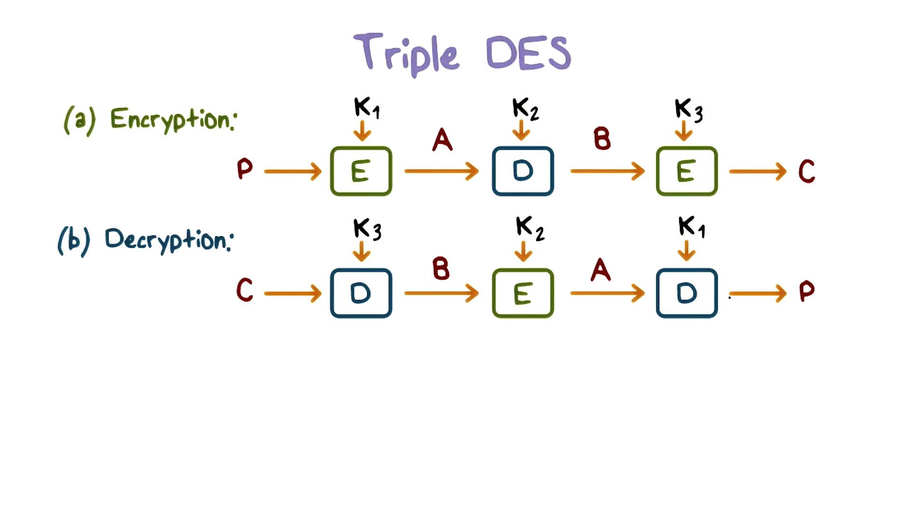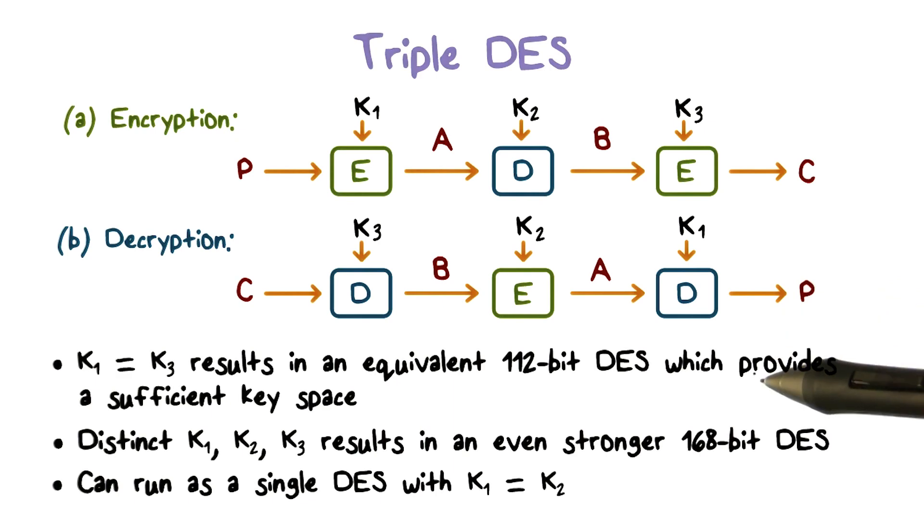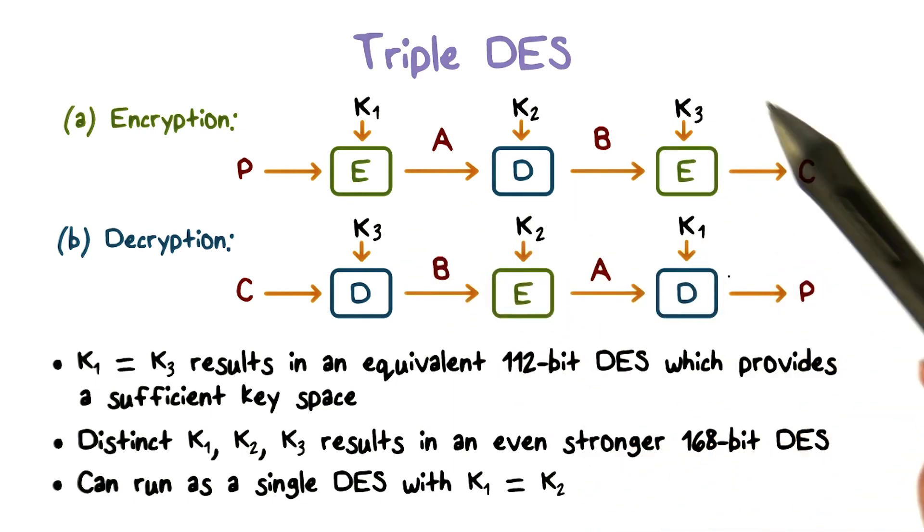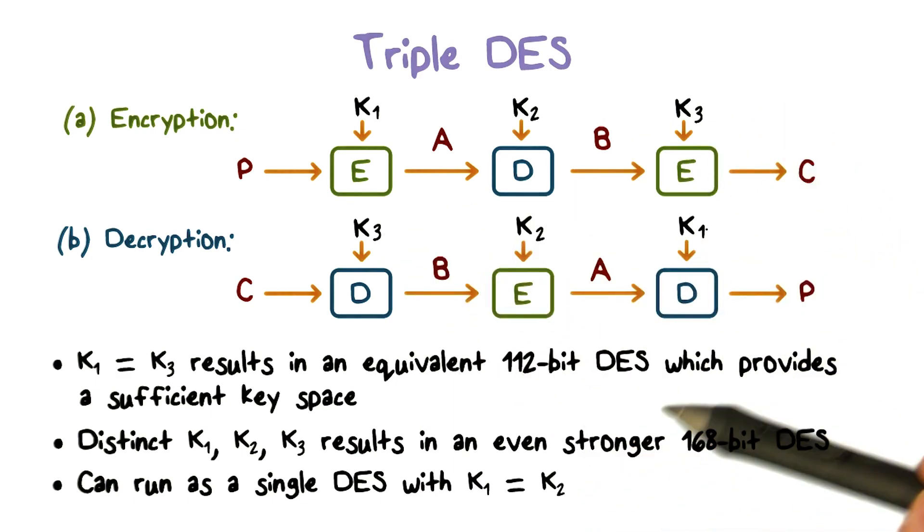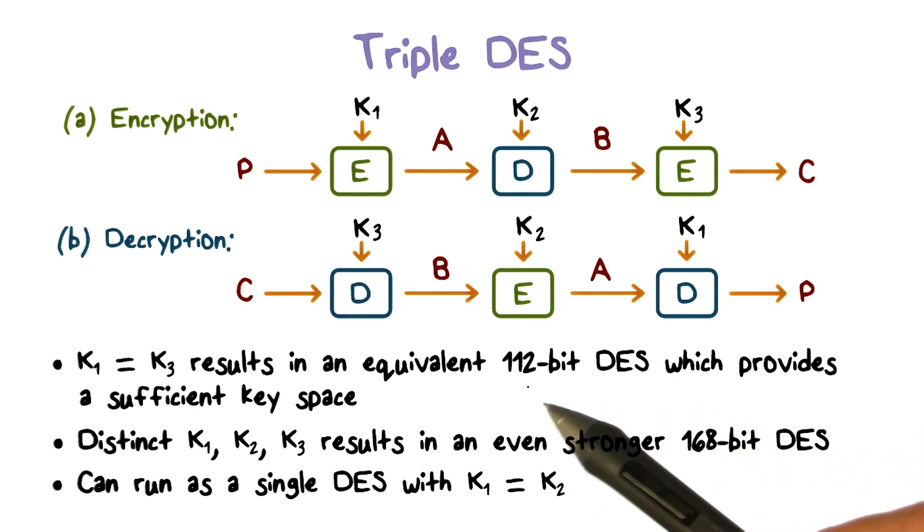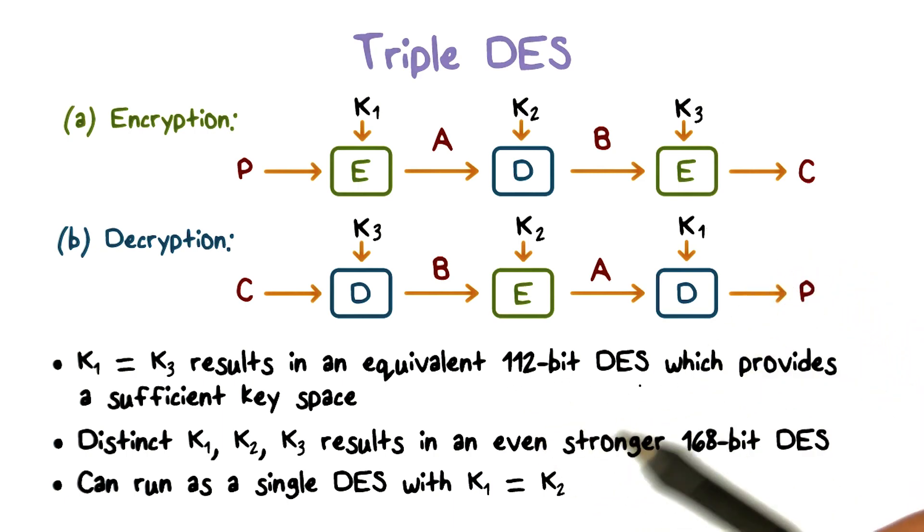The advantage of using this order of operations is that it supports multiple key lengths. In particular, if key one is the same as key three, then the result is a 112-bit DES. If all three keys are different, then the result is a 168-bit DES.